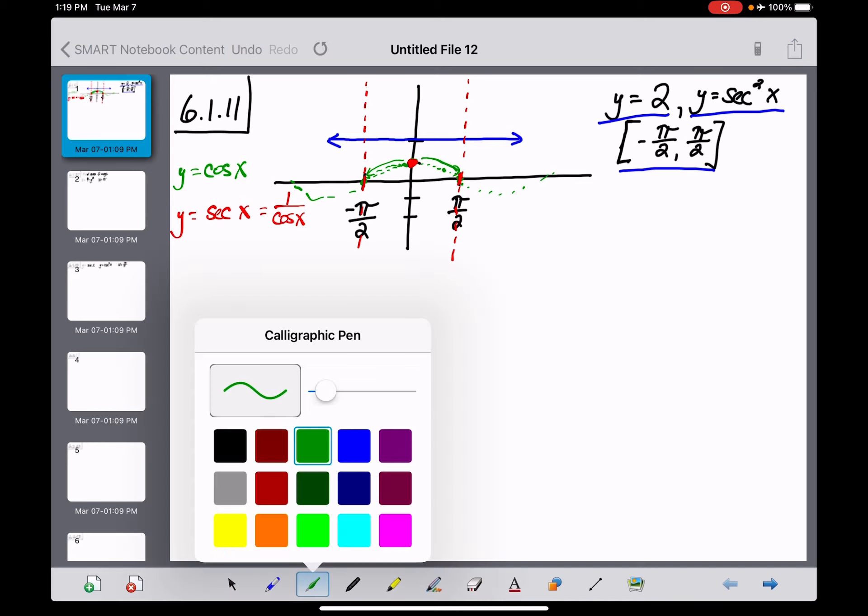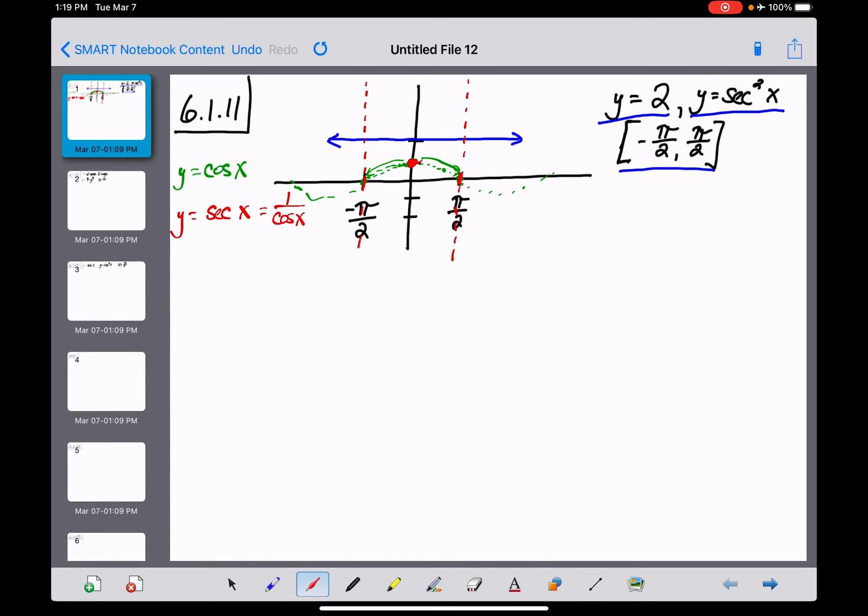The cosine graph started at 1 and went down in either direction, approaching 0. That means its reciprocal, secant, starts at 1 and goes up on both sides to a value approaching infinity. So the graph of secant looks like that. Now let's put it all together.